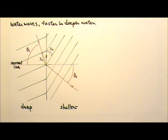Let's say we have deeper water on this side and shallower water on the other side. This is the boundary or interface between the two media. This is the normal line that is perpendicular to the boundary.